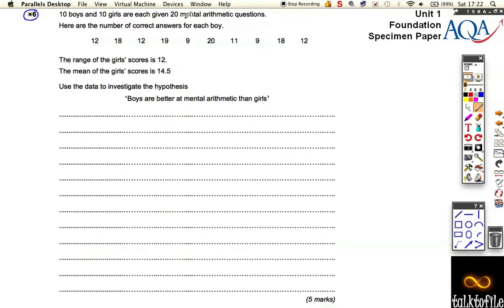So we've got 10 boys and 10 girls, and they're given 20 mental arithmetic questions. The scores for the boys is here, and we've got the girls' range and mean. Remember that mean is the average, and the range is the spread - it's the biggest number minus the smallest number. It tells us how spread out the information is. There's the hypothesis here: boys are better at mental arithmetic than girls, and we need to investigate this.